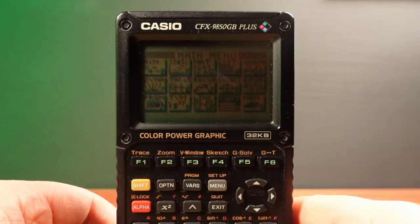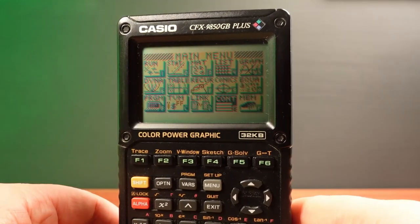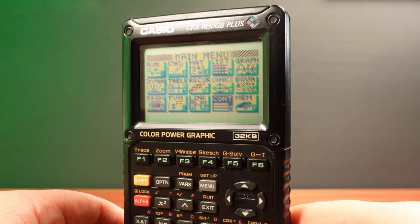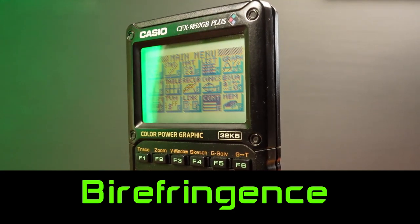But the pixels on this Casio don't have any sub-pixels or any colour filtering. Instead, they're using an effect called birefringence.